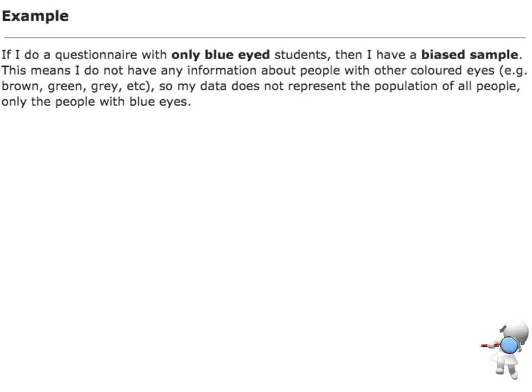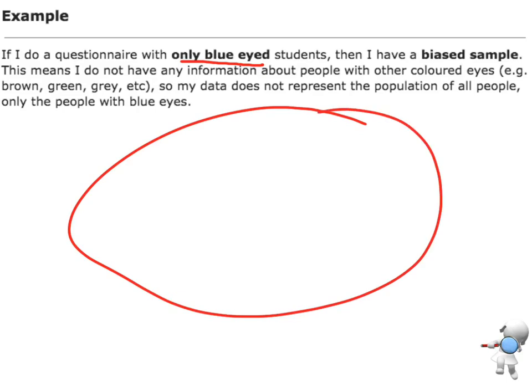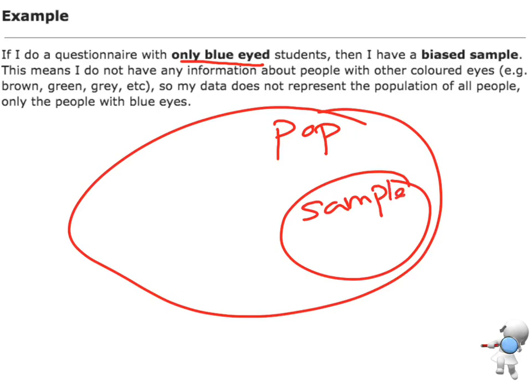If I do a questionnaire, for example, and I'm only doing that with blue-eyed students, then that will give me a biased sample. In terms of the entire population, my sample only contains people that have blue eyes, so I don't have any other eye color.